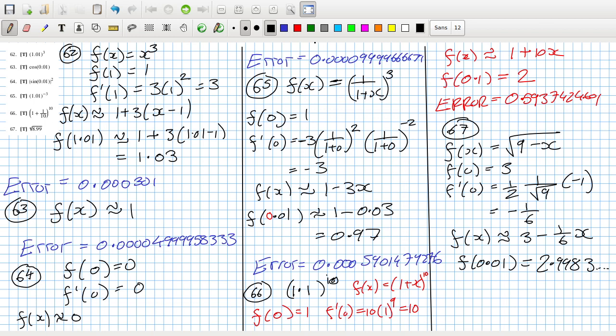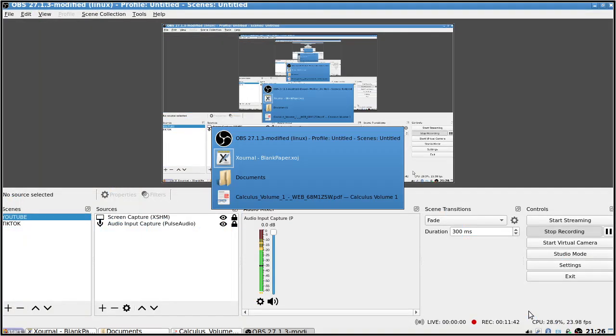So f of x is roughly 3 minus 1 over 6 x. So f of 0.01 would equal 2.9983 etc. So that means the error is 0.00000046322035.